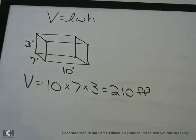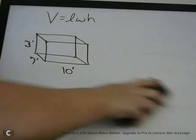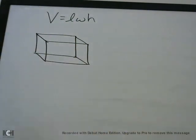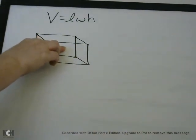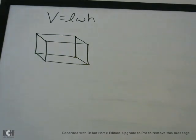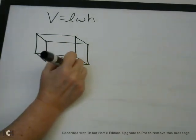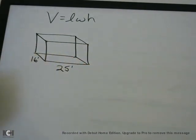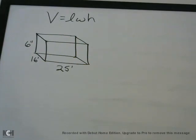That's pretty straightforward — you just multiply the numbers together. Let me show you something similar but a little bit trickier just to be aware of. Let's say you are building a driveway and you want to pour some concrete and you need to know how much concrete you need. So your driveway is 25 feet in length, 16 feet in width, and 6 inches in height. How much concrete do you need? What's the volume of this?